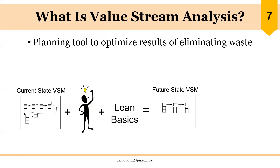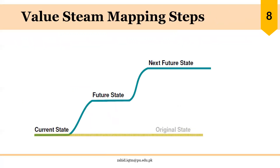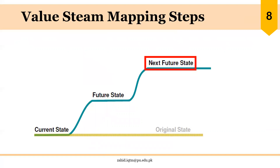These are the simple steps in VSM. We first draw the current state, and based on discussions, brainstorming, critical analysis, and application of lean tools, we move to the future state VSM. The more detailed and accurate the current VSM is, the better the chances of improving the system. This process moves from current state to future state to the next future state — it is an ongoing process.